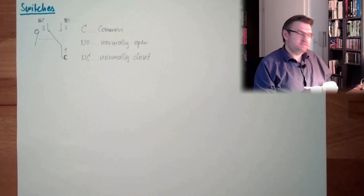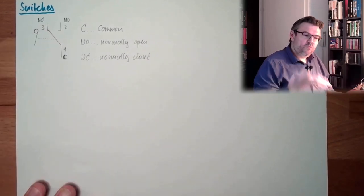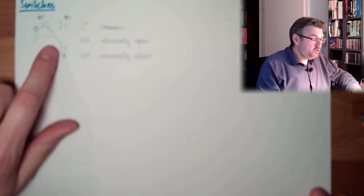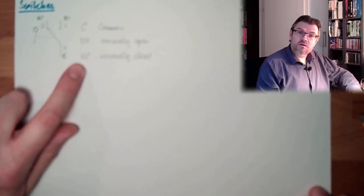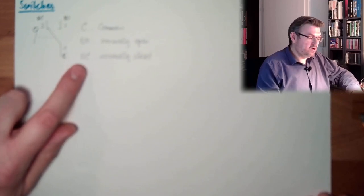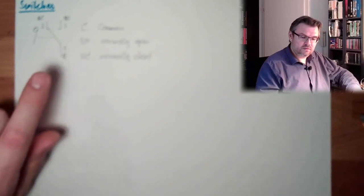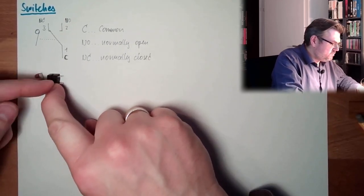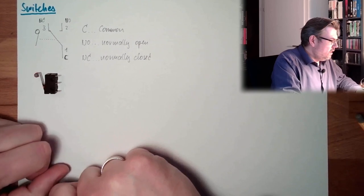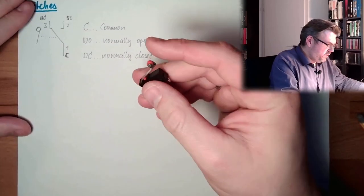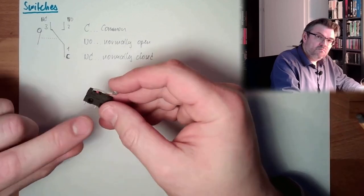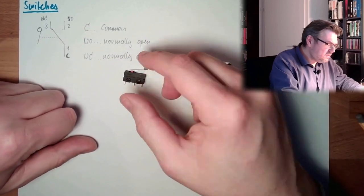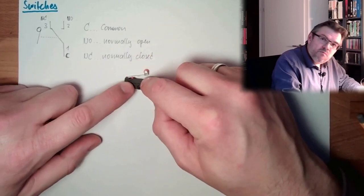Some do only have two contacts. Then it's usually a normally open contact. When you push the button, then it's closed. But there are also switches which are only one normally closed contact. Emergency switches are usually like this. They are normally closed, and if I operate, they are open. Here we have the C, common. So that's a mechanical switch, mechanical. Because there is really some sheet of metal in there which is operating the thing. It's really operating.